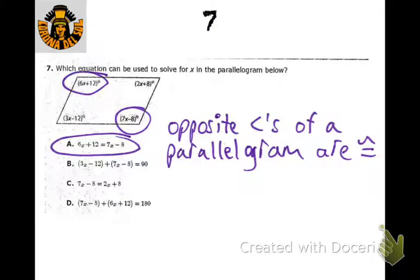If this is a parallelogram, then we know the opposite angles are congruent — so that's one thing that's definitely true — and we can set them equal to solve for x.